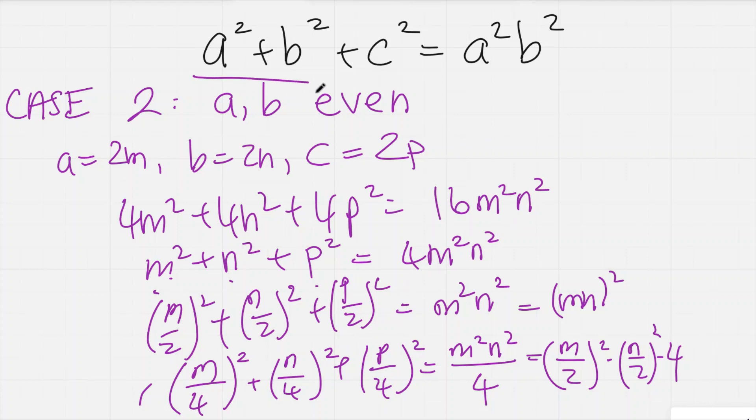And therefore there are no solutions when a and b are both even to this. And because we've considered the other case as well, it means that there's no solutions to this equation at all.